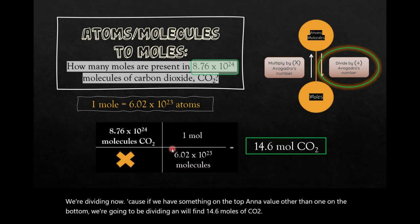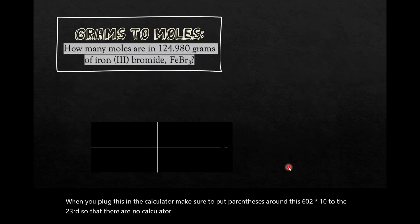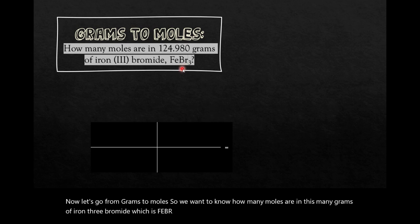When you plug this in the calculator, make sure to put parentheses around this 6.02 times 10 to the 23rd, so that there are no calculator errors. Now let's go from grams to moles. So we want to know how many moles are in this many grams of iron-3-bromide, which is FeBr3. I've given you FeBr3 this time, but in the future, you'll be writing out the chemical formula yourself.